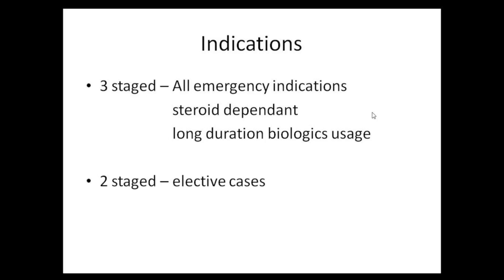The duration between pouch creation and ileostomy closure must be at least two to three months. Before stoma closure, a digital rectal examination must confirm no stricture or growth, and the finger must pass easily. A pouchoscopy (proctoscopy or sigmoidoscopy) must confirm complete healing with no leak. A contrast examination must show complete filling of the pouch with no microleaks. Only after all these criteria are met should the patient undergo stoma closure.